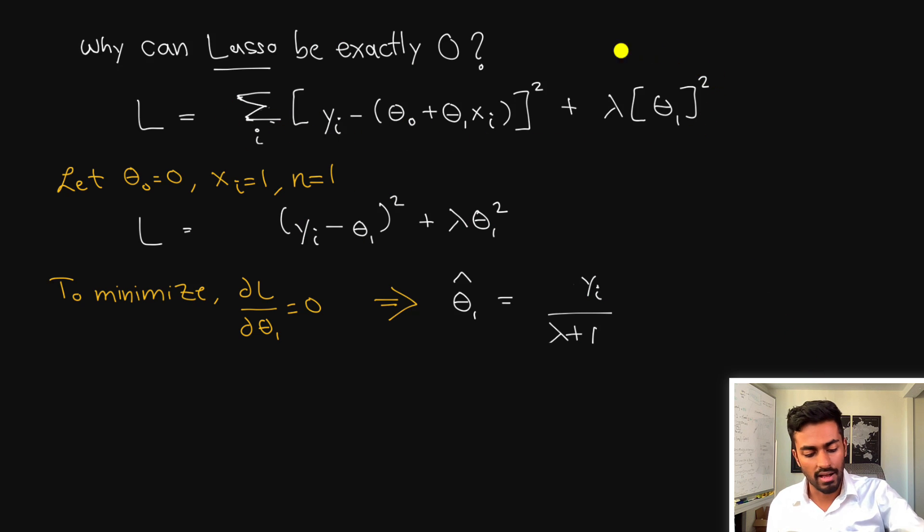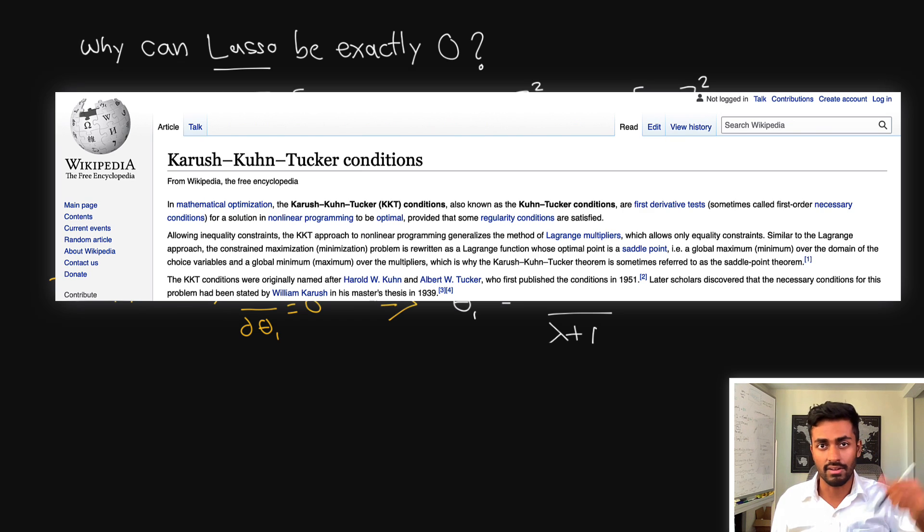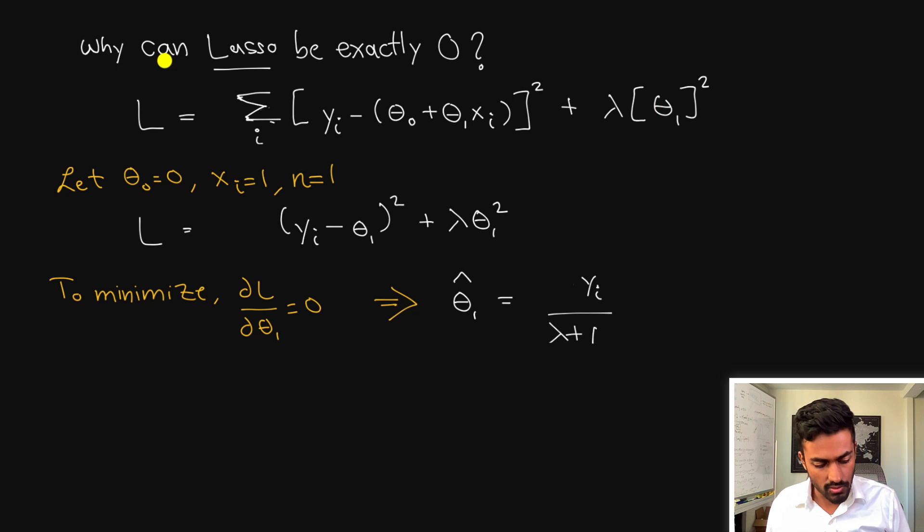Up here I have the loss with the residual sum of squares along with the ridge regression penalty and the way that we actually bubble up from the constraints into the equation itself is through a constraint optimization technique that I'll link down in the description below. But in order to get some intuition of why lasso can be zero and why ridge is typically near zero I want to consider a very simple case.